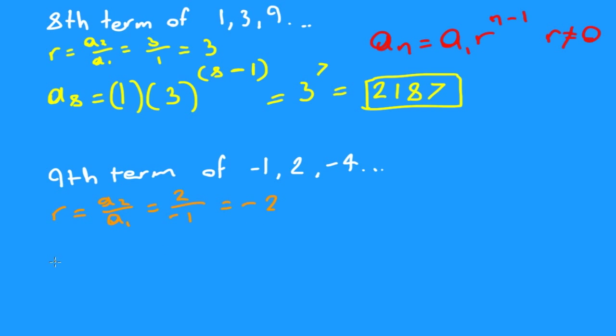We got our ratio. So we want to find our a_9, which is the 9th term. Then we get our first term, negative 1, times our ratio, negative 2, to the 9 minus 1. That would be equal to negative 2 to the 8th, which is equal to negative 256.